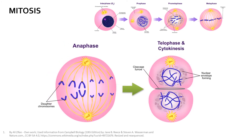Finally, at telophase and cytokinesis, the cells separate via contraction of actin filament rings around the inside of the cellular membrane. The nuclear membrane reforms, and the nucleoli reappear following the separation, allowing the chromosomes to unwind to their normal, less organized, and less condensed shape.